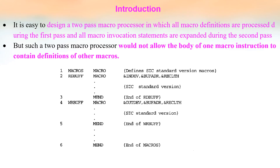We can see how to design a macro processor. The easy method is a two-pass macro processor in which, in the first pass, the definition of the macro is processed, and in the second pass, macro invocation statements are processed. But this type of design cannot handle the definition of one macro inside the definition of another macro — that is, it will not allow nested macros.